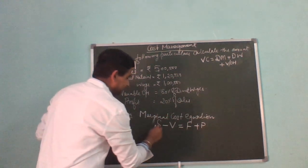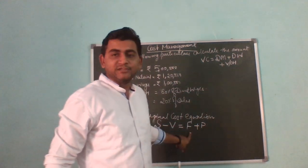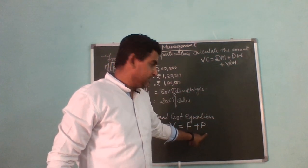Sales minus variable cost. Sales minus variable cost is equal to fixed cost plus profit.